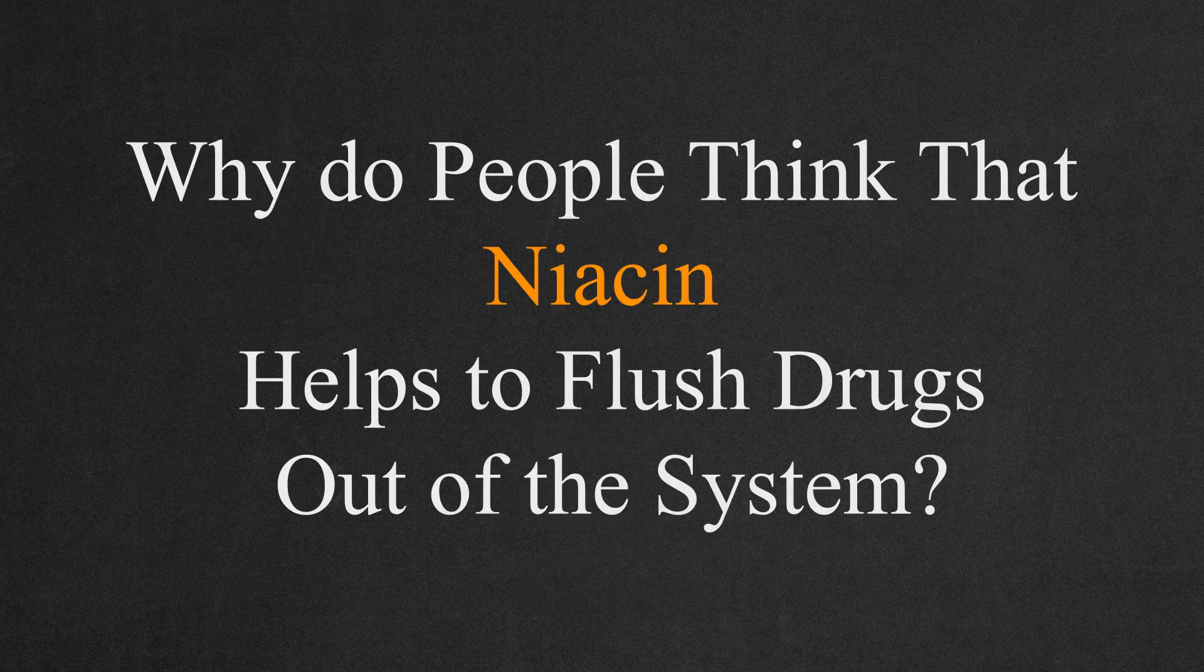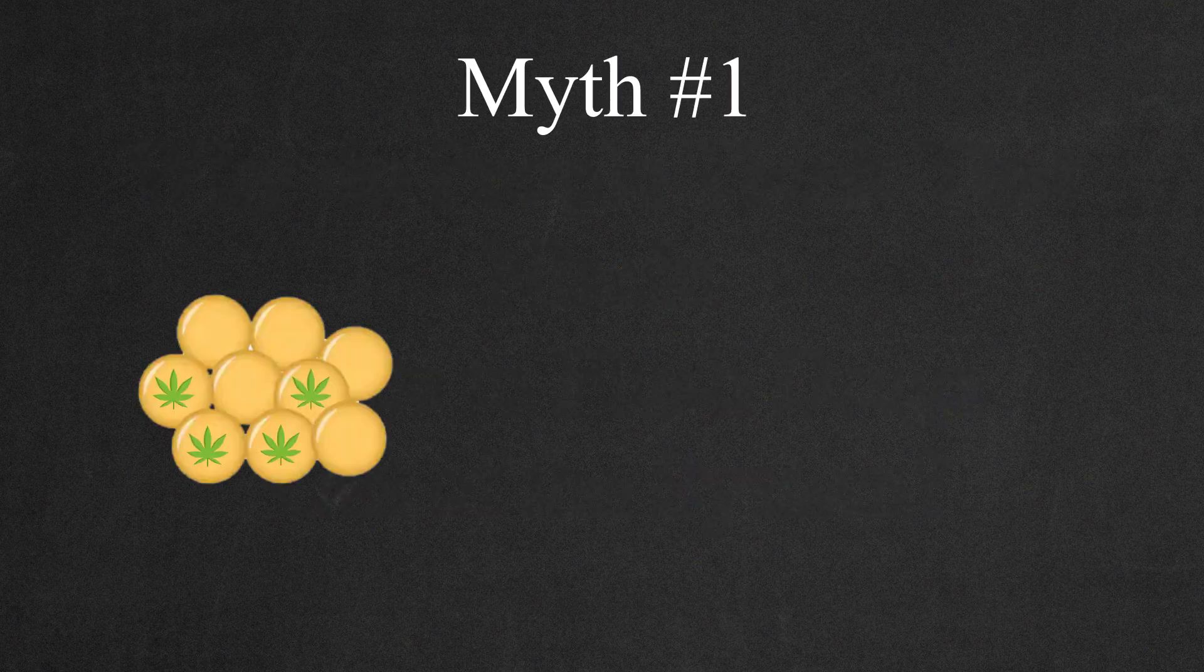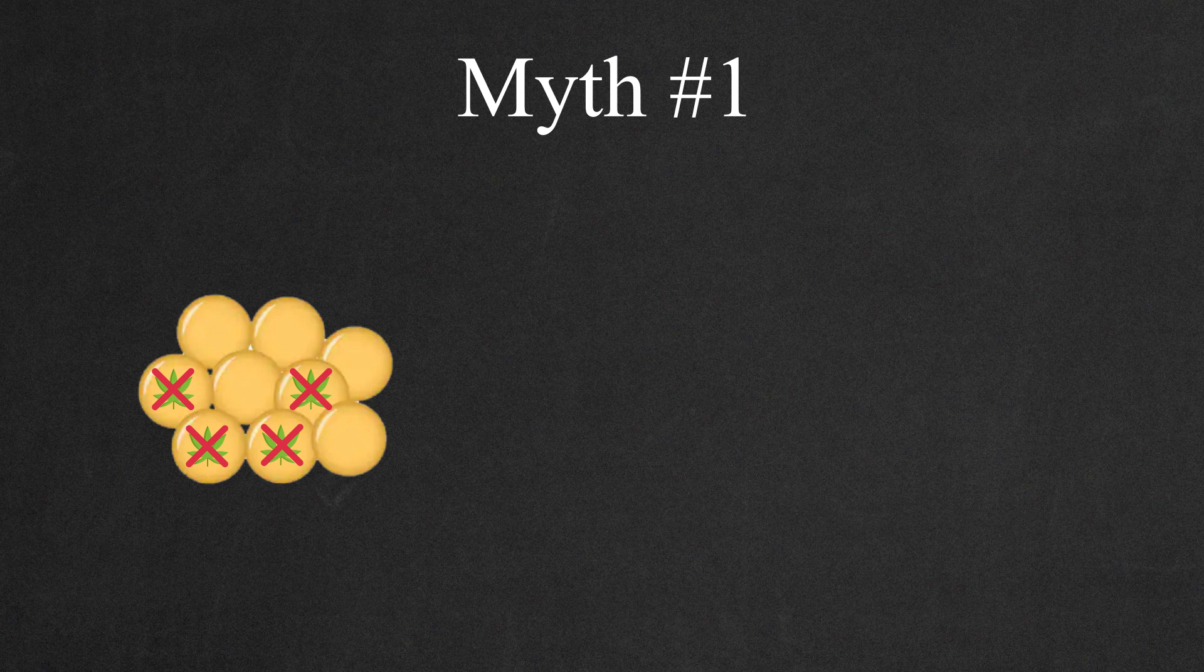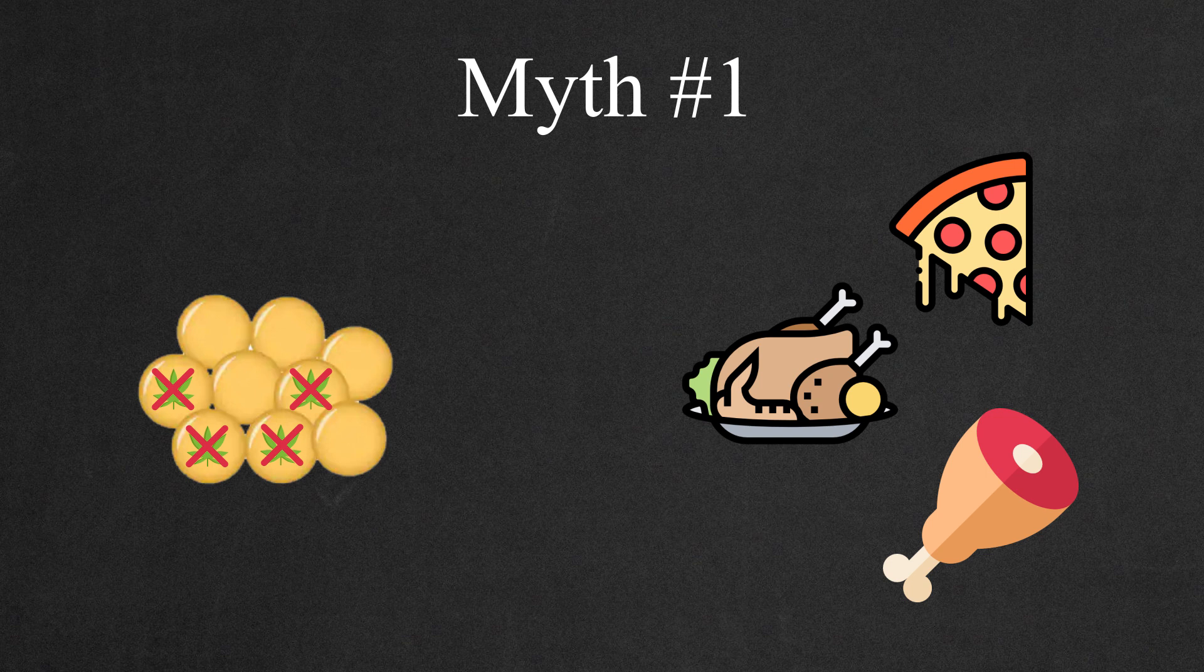So, why do people think that niacin helps to flush drugs out of the system? There are two myths behind this. Myth number one: Niacin breaks down fat to release THC metabolites that have been stored in the fat. But that's not true. Niacin helps in breaking down fat from foods that have been consumed. It does not help in breaking down fat that's been stored in adipose cells.